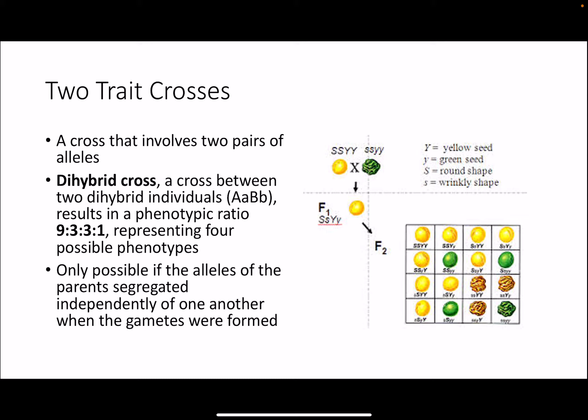In this example with pea plants we're tracking two different traits: the color of the seed and the shape of the seed. The yellow seed allele is depicted by a big Y, the green seed allele by a little Y, the round shape allele is big S, and the wrinkly shape is little s. Breaking these down, we see the nine to three to three to one ratio: nine individuals will have round yellow seeds, three will have round green seeds, three will have yellow wrinkly seeds, and one — the double homozygous recessive individual — has green wrinkly seeds.